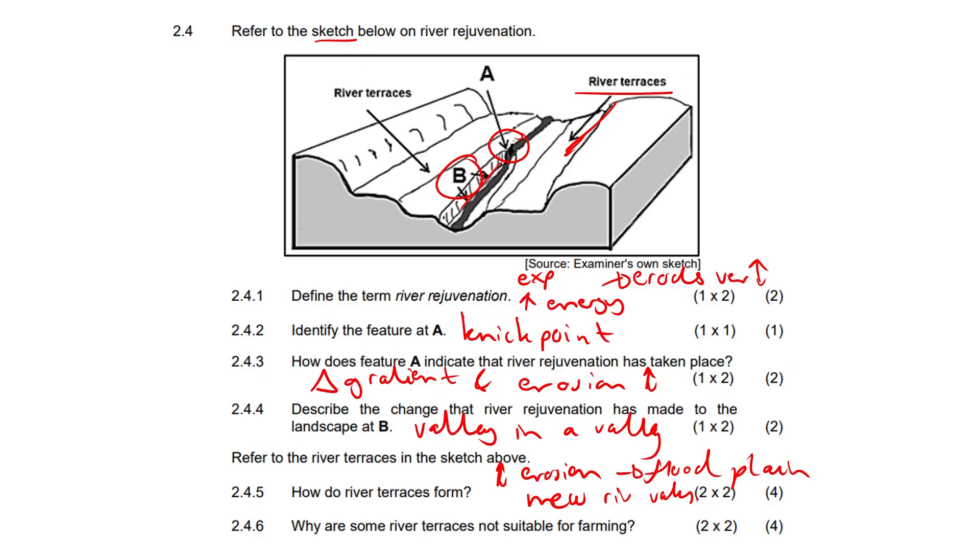And 2.4.6. Why are some river terraces not suitable for farming? What's the reasoning behind it? Main reason is that, okay, let's just give two nice points here. Please feast your eyes, top left.